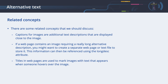Titles in web pages are used to mark images with text that appears when someone hovers over the image. Titles can be read by some screen readers, but not all, so do not rely on them. An image should always have an alternative text. One should not be used instead of the other — each should be used properly for the things that they were designed to do.